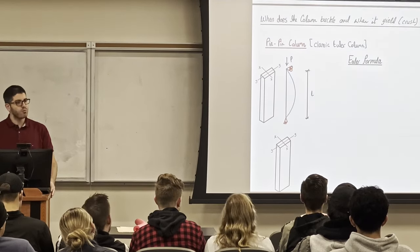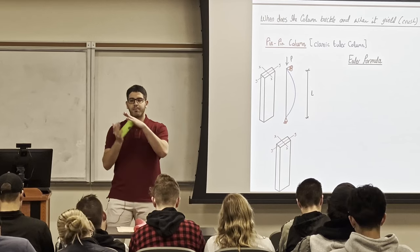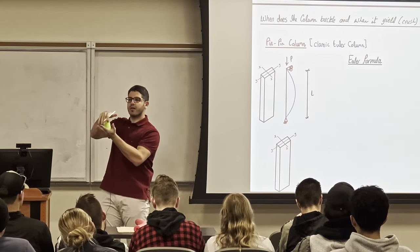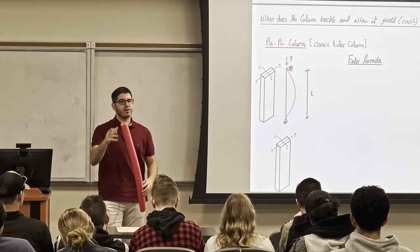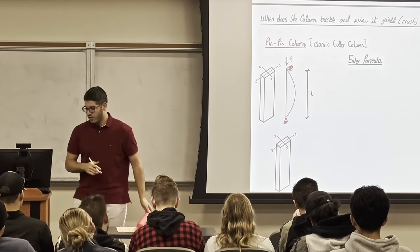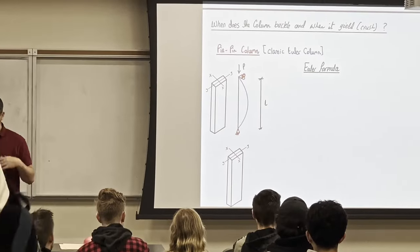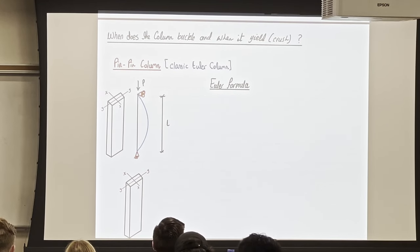Here are the two modes of failure. First, yielding: when I apply compression and nothing bends, but the column takes stress until it crushes. Second, buckling: when I apply a load and the column simply deflects laterally. So when does the column buckle and when does it yield? In this lecture, we're going to design the column to not fail in either mode.